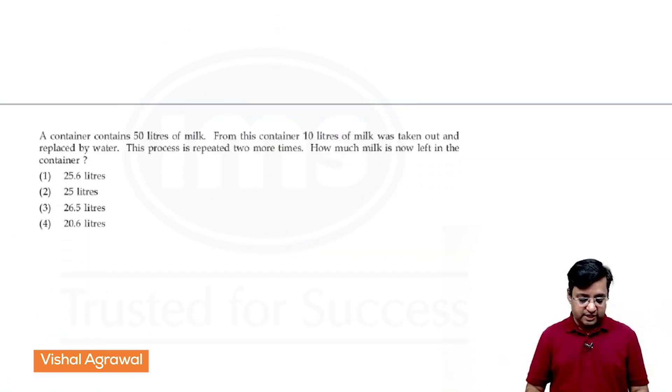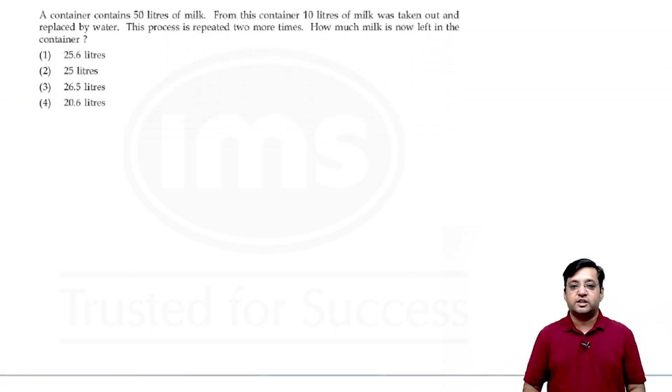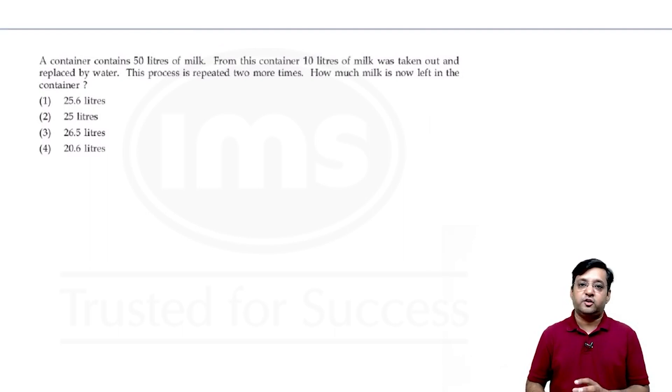I am beginning with the first question. The first question says a container contains 50 litre of milk. From this container 10 litre of milk was taken out and replaced by water. This process is repeated two more times. How much milk is now left in the container? This question is of unit 1 of your handbook given by CBAC.